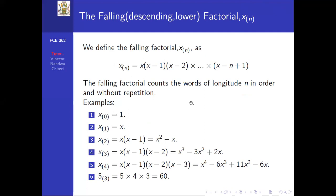We now define the gamma function. The gamma function Γ(x) is defined by the improper integral from 0 to infinity of t^(x-1) times e^(-t) dt, where x excludes negative integers and zero.